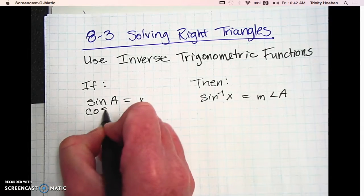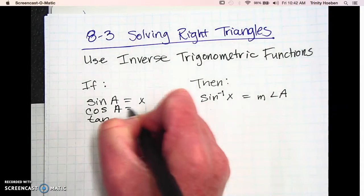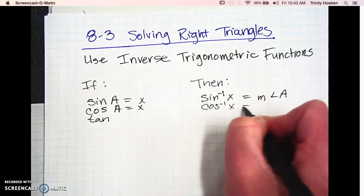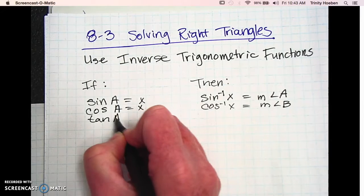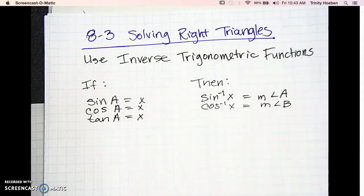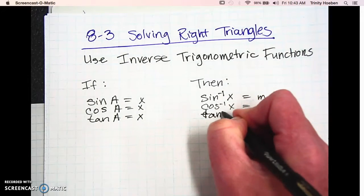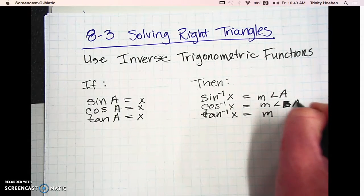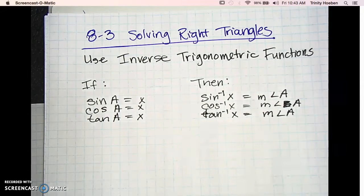The same thing is going to be true for the cosine and the tangent. The cosine of A is going to be equal to X; therefore, the inverse of the cosine of X is going to be equal to the measure of angle A. Same thing for the tangent: when the tangent of A is equal to the ratio, then the tangent inverse is going to equal that measure of angle A.